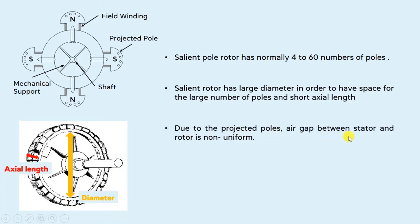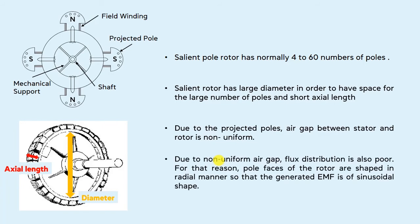Due to the projected poles, the air gap between the stator and rotor is non-uniform in the salient type rotor, which results in poor flux distribution. For that reason, the pole faces of the rotor are shaped in a tapered manner so that the generated EMF is of a sinusoidal shape. So due to the poor flux distribution, the pole faces are shaped in a tapered manner in order to achieve a sinusoidal EMF output in the case of salient type rotor.